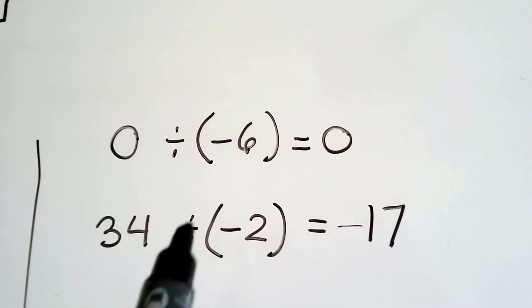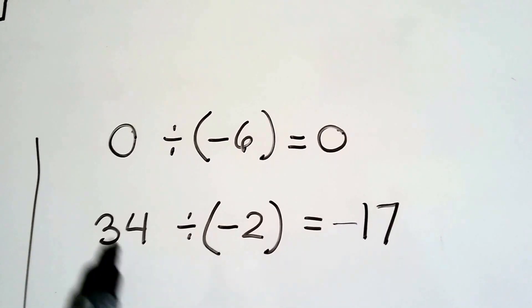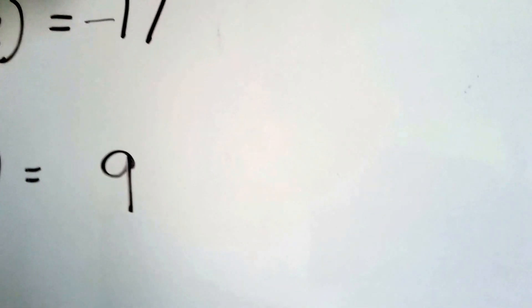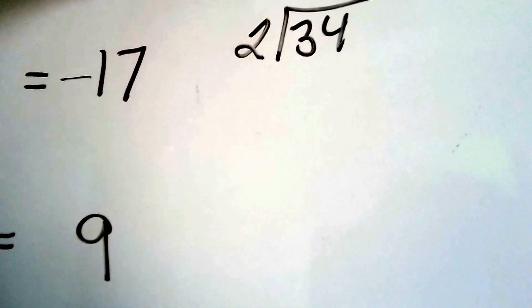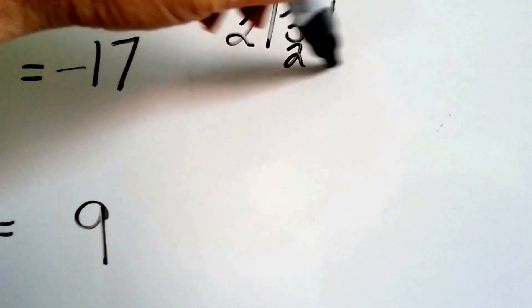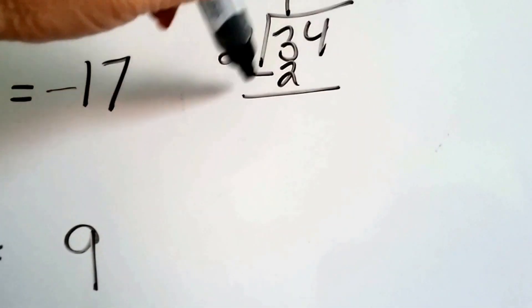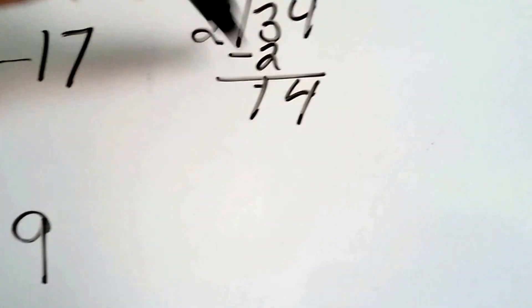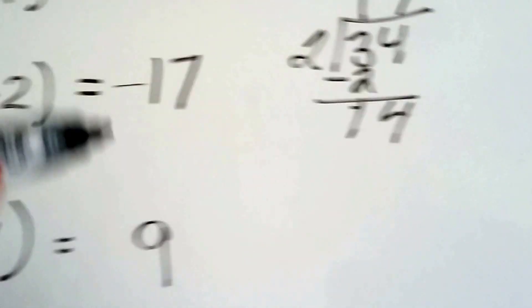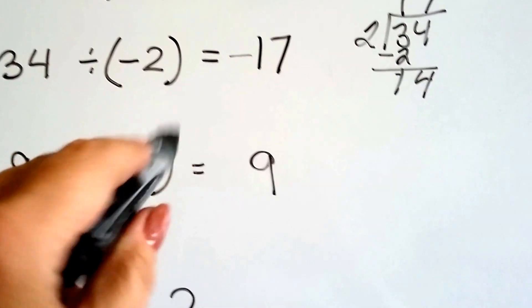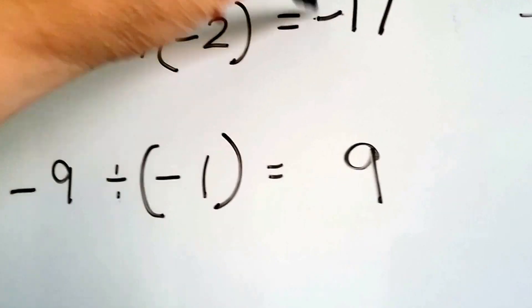And if we have 34 and we divide it by a negative 2, they have unlike signs. And 17, if we take 34 and we divide it by 2, it goes into the 3 one time. And 2 times 1 is 2. We do our subtraction. 3 take away 2 is 1. It's the 4's turn to drop down. And now 2 goes into 14 seven times. So we know that it's a 17, and because the signs are unlike, it's a negative, isn't it? Negative 17.